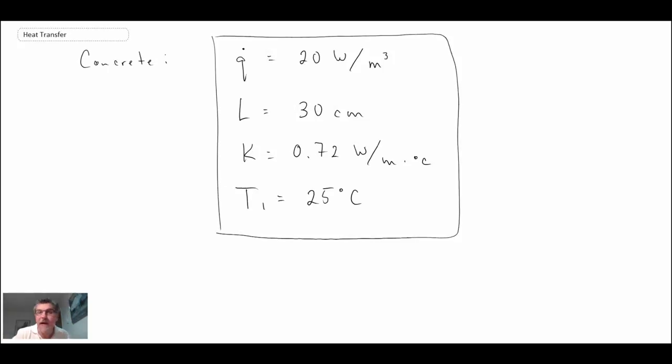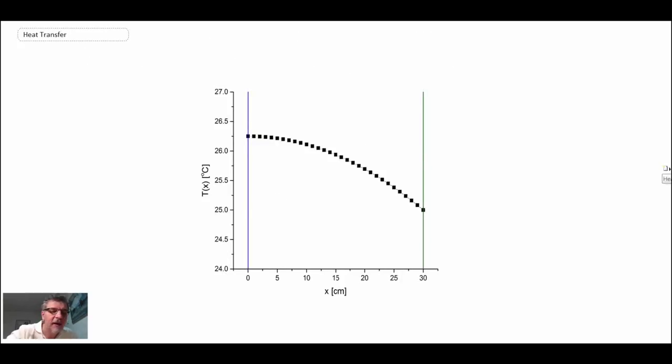When we do that, the following plot results. So let's take a look at that. This is what the temperature distribution looks like resulting from our equation. Okay, now T1, that was right here, and we can see that is 25 degrees C as it should be. So if I draw a line over, we can see that matches up there.